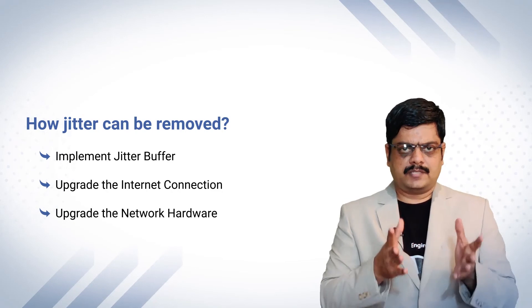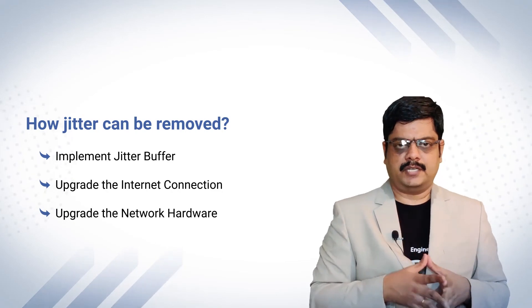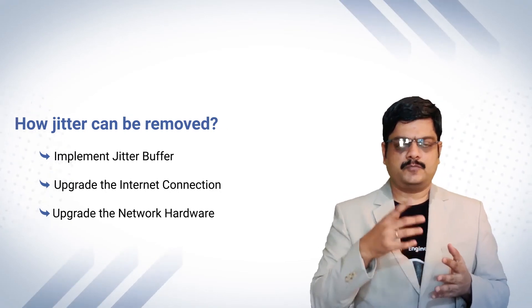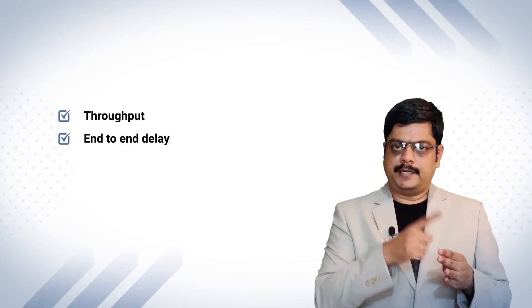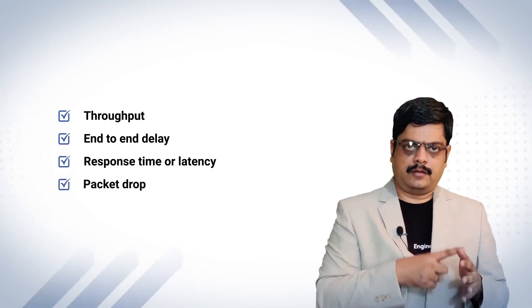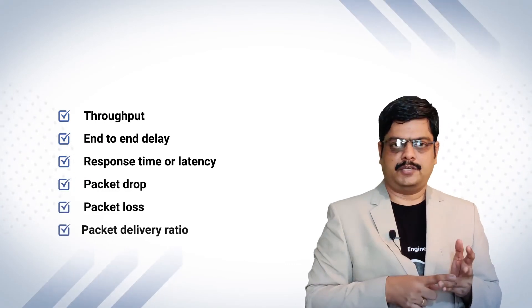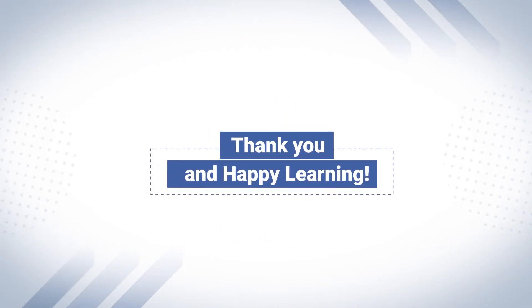With this, we have come towards the end of our session. In today's session, we discussed various performance metrics: throughput, goodput, end-to-end delay, latency or response time, packet loss, packet drop, packet delivery ratio, and finally jitter. I hope you have got a fair understanding of the network performance metrics. In future, we will see more topics relevant to network performance on wireless networks. Thank you, and happy learning!